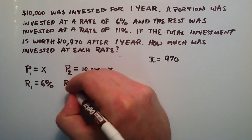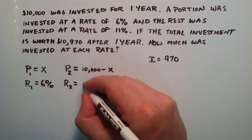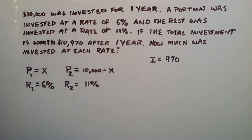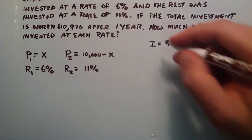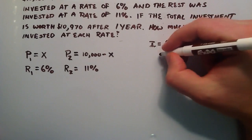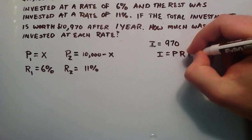And of course, R₂ would be the rate that corresponds with Principle 2, which is 11%. So now that we've got the variables defined as much as possible, we're just going to basically plug them into the simple interest equation, which is interest is equal to Principle times Rate times Time.